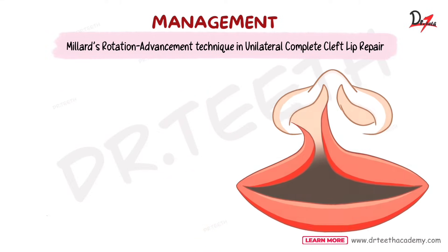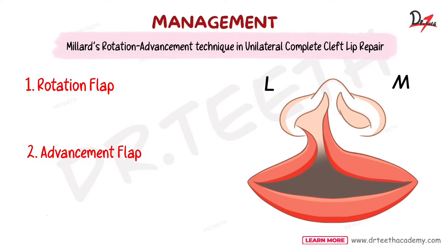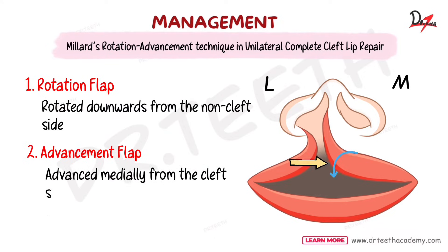In Millard's rotation-advancement technique, there are two types of flaps: the rotation flap and the advancement flap. The rotation flap is rotated downwards from the non-cleft side, and the advancement flap is advanced medially from the cleft side. Together, these produce a properly formed lip after the procedure.